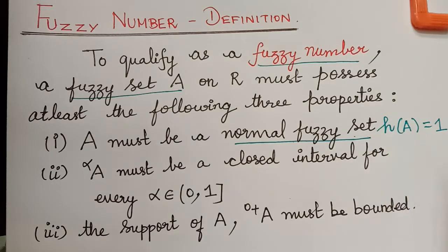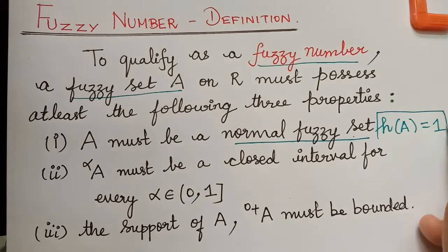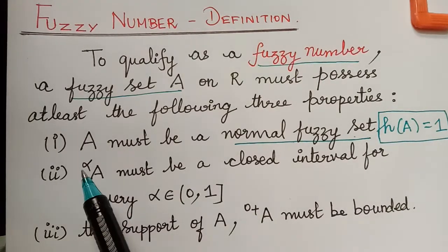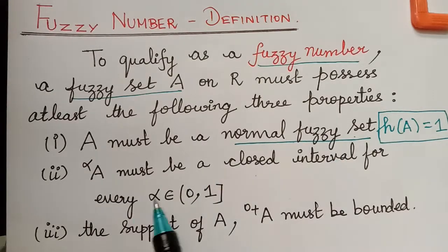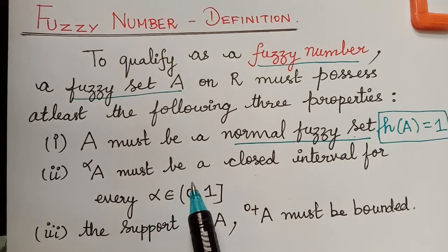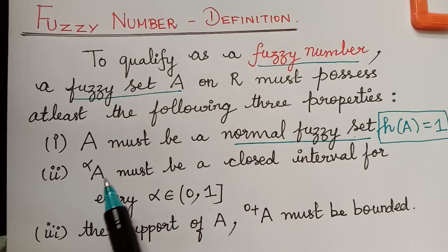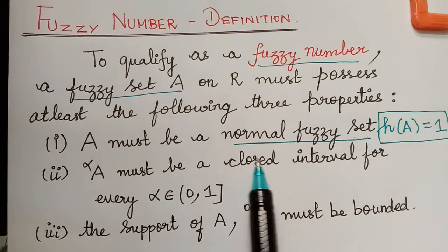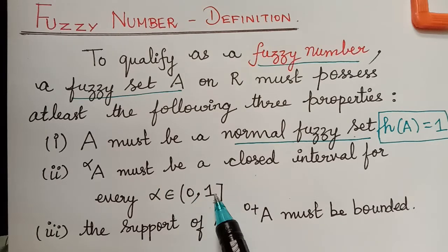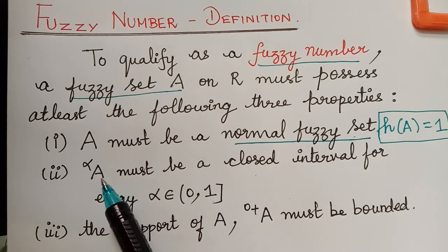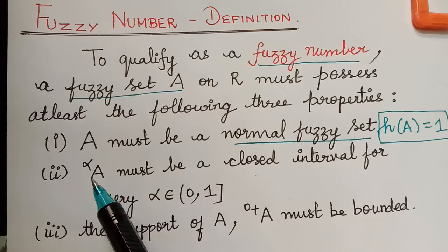The height of the fuzzy set must be equal to 1. The second condition is that the alpha cut of A must be a closed interval for every alpha which is an element of (0, 1], excluding 0 and including 1. We have to consider a value of alpha in this interval and consider the alpha cut set for that value of alpha. The alpha cut set will be all those elements with membership grade greater than or equal to alpha.